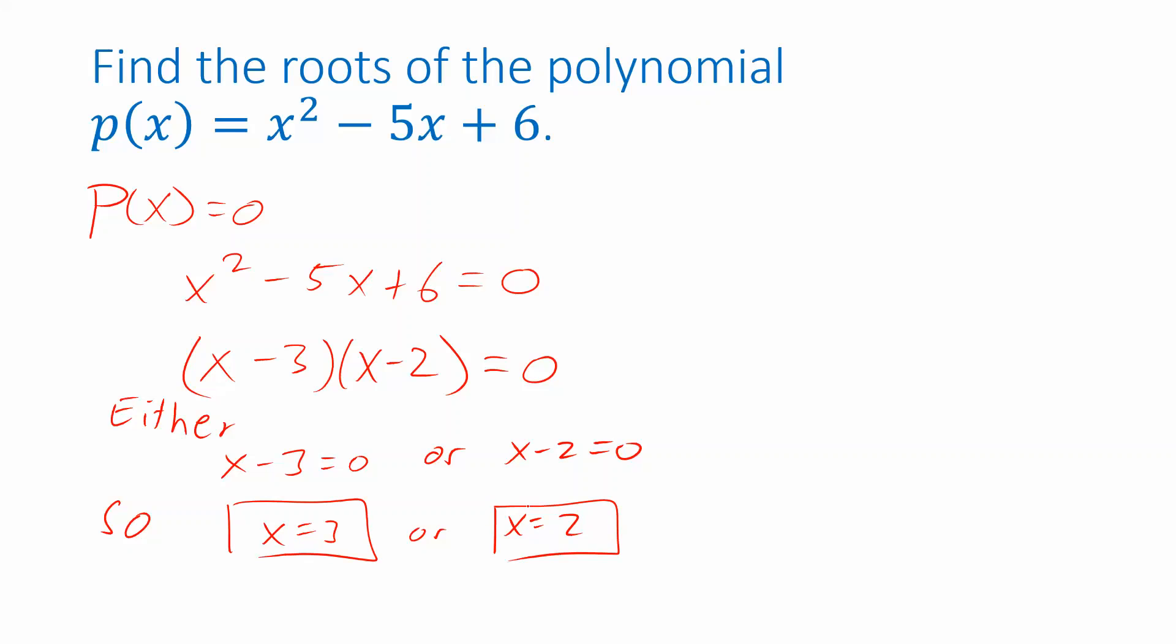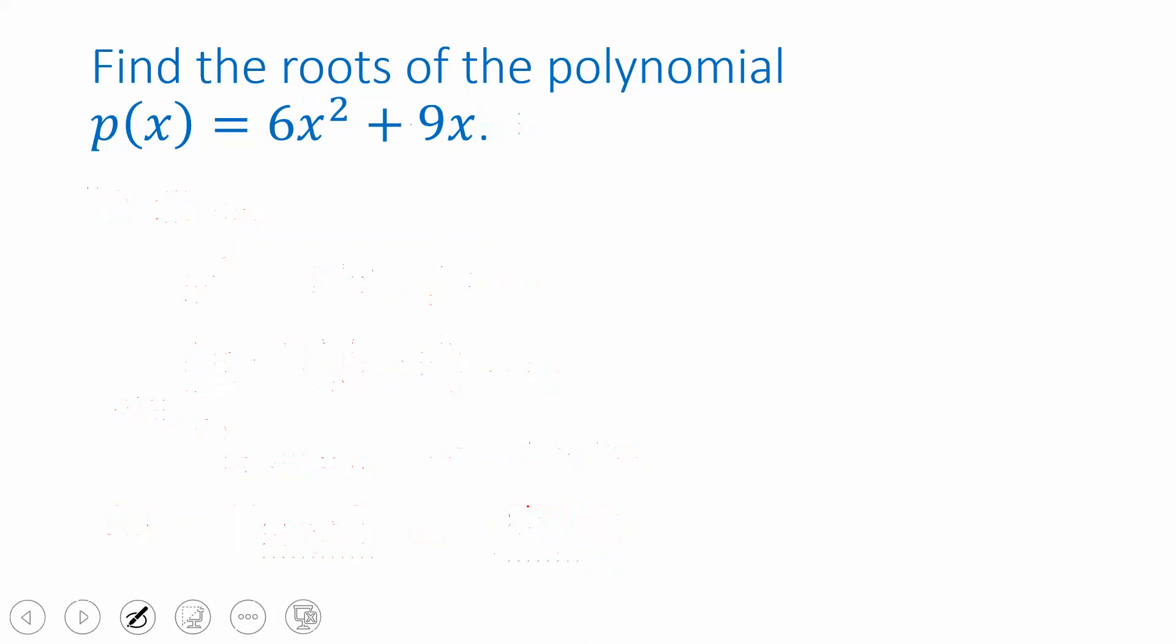Another approach instead of factoring might have been to use the quadratic formula. That would have worked just as well. We will tend to use factoring when we can just because it's easier. Like in this example, again I want to know when the output will be zero. So I take the formula that defines my polynomial, set it equal to zero, and solve for x.